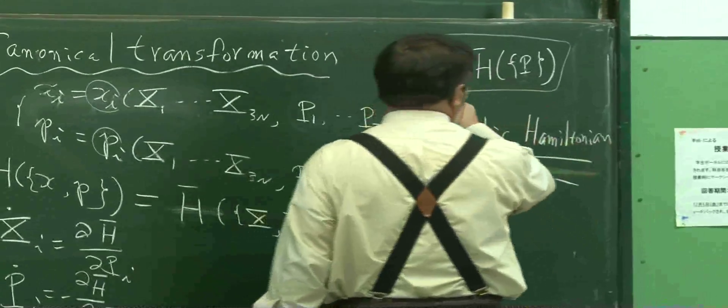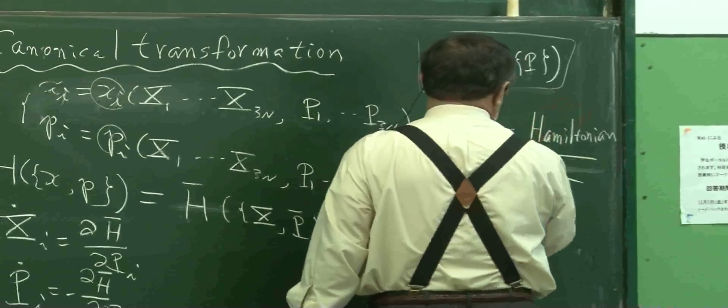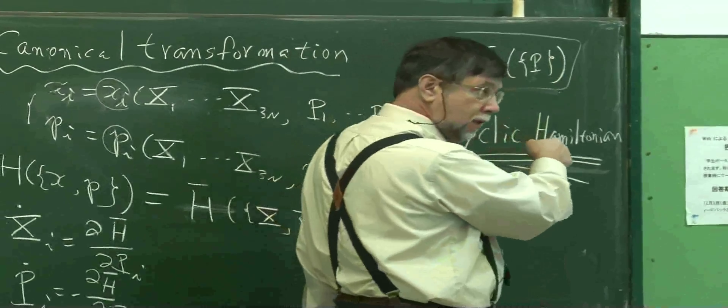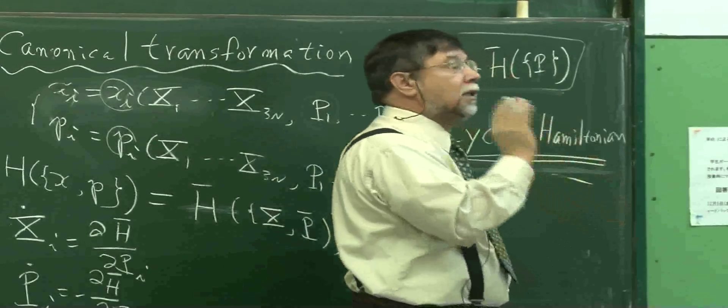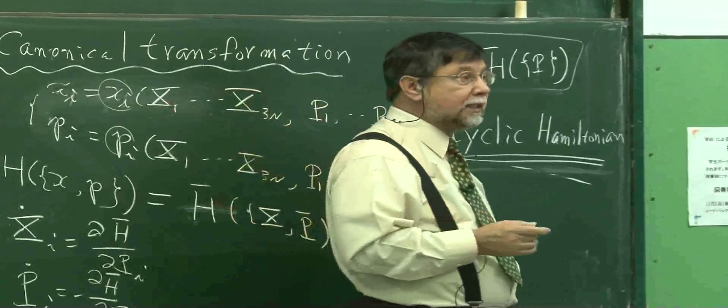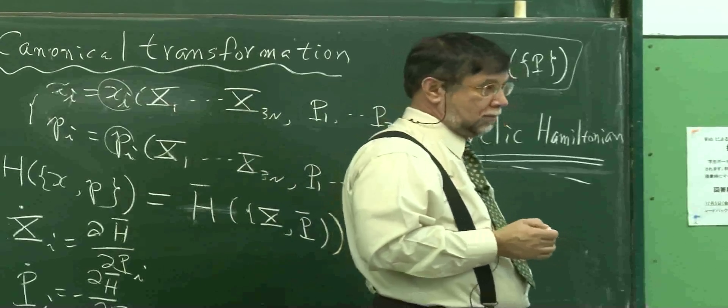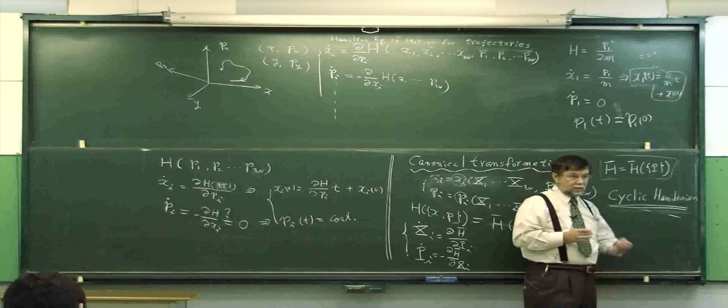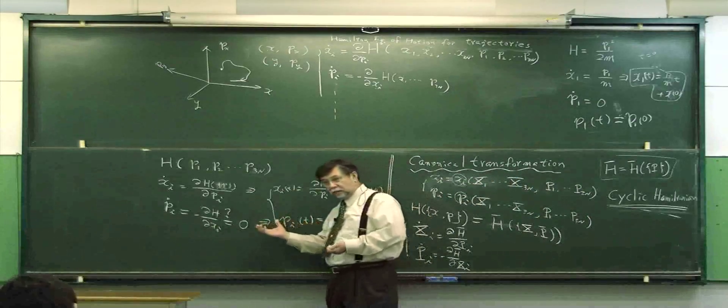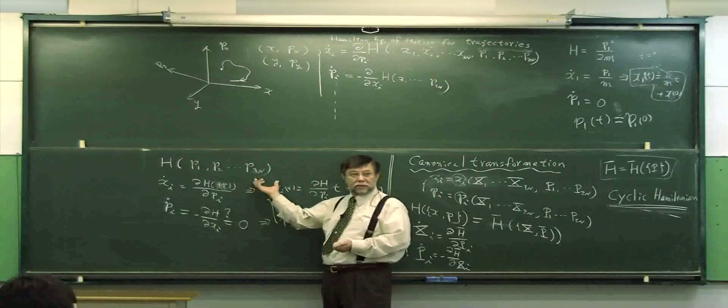If the Hamiltonian is cyclic, then all generalized momentum is invariant of motion. Now, if you found the invariant of motion, you can solve the equation of motion.